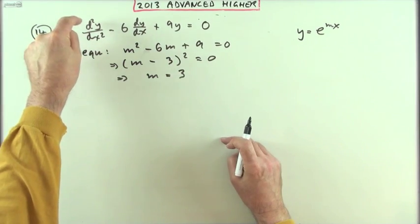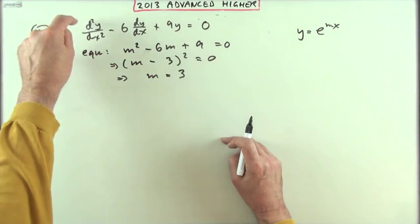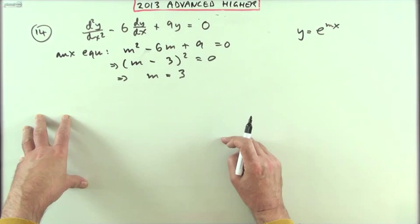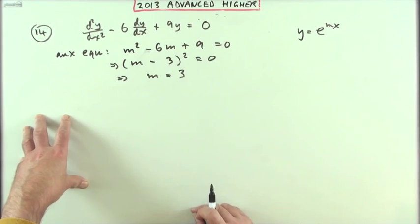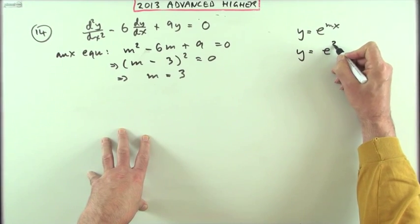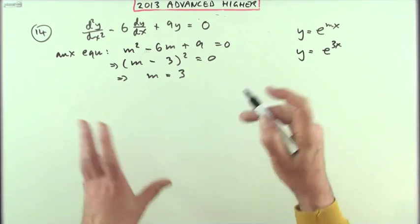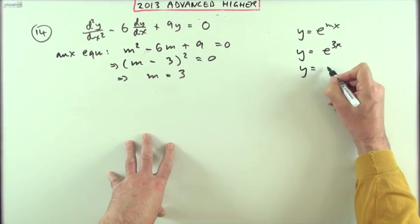A second-order differential equation requires two solutions, because two constants would pop out from the solution. This is only going to give me one. This is saying that if I put e^(3x) through it, it'll work, but that's only one part.